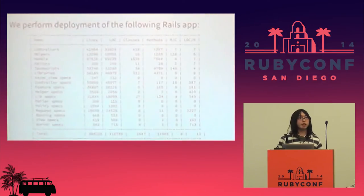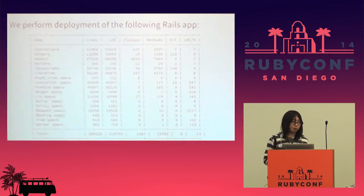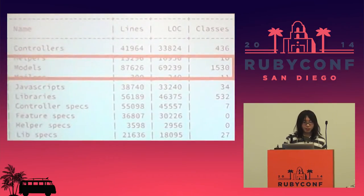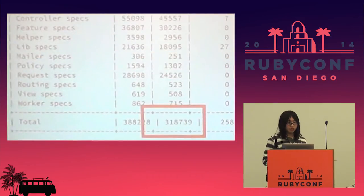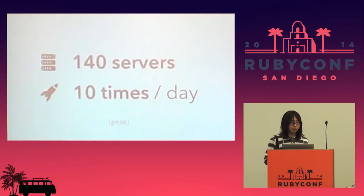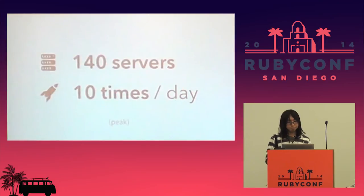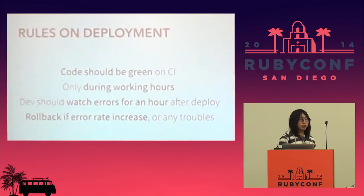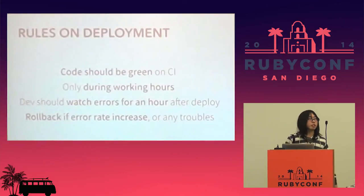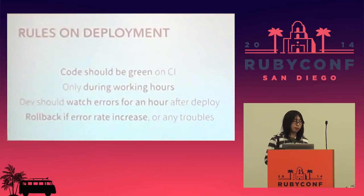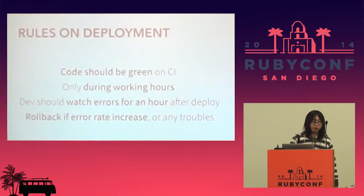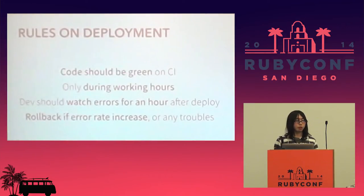So, deployments. Here's our current state. We are running the famous and biggest Rails application in Japan, so we perform deployments of this huge Rails application every day. We have over 1,500 models and lines of code is overflowing. Our infrastructure has over 140 servers and we ship over 10 times per day at peak. We allow all developers to perform deployments at any time under their own flow. Code should be green on CI, only during working hours, and developers should watch for errors for an hour after they deploy, and roll back if error rate increases or there are any troubles.